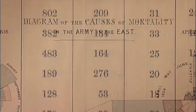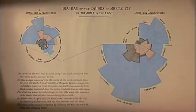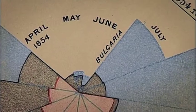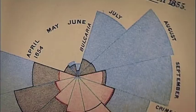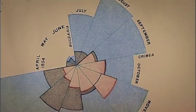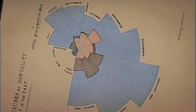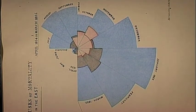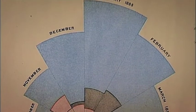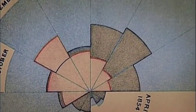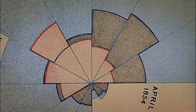What has cemented her place in the statistical history books are the graphics she used, and one in particular: the polar area graph. For each month of the war, a huge blue wedge represented the soldiers who had died from preventable diseases. The much smaller red wedges were deaths from wounds, and the black wedges, deaths from accidents and other causes. Nightingale's graphics were so clear, they were impossible to ignore.